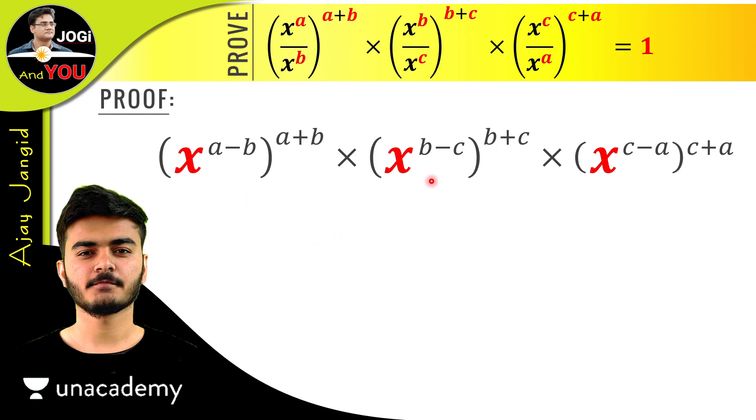We have three x's here and all three are bases. According to the rule, power to power will be multiplied: (a-b) × (a+b), here (b-c) × (b+c), and here (c-a) × (c+a).